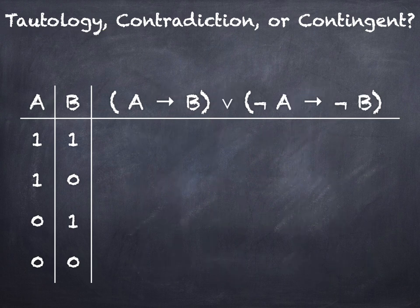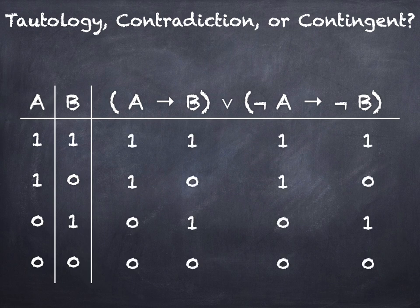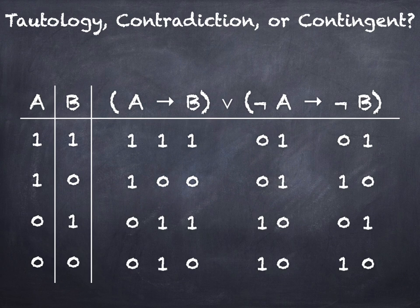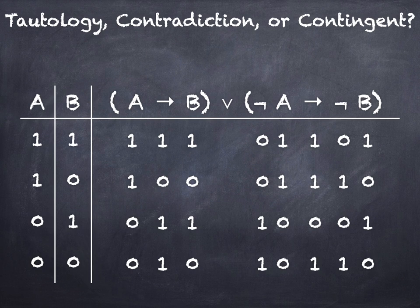Very similar problem here — slightly different expression. Go ahead and pause the video and see if you can work it out. Again we're going to copy over the atomic sentences. The negations are simple enough. We've got the regular characteristic truth table for the conditional 'if A then B' on the left. The conditional on the right is different from the last problem but not more complicated — it's 1, 1, 0, 1.